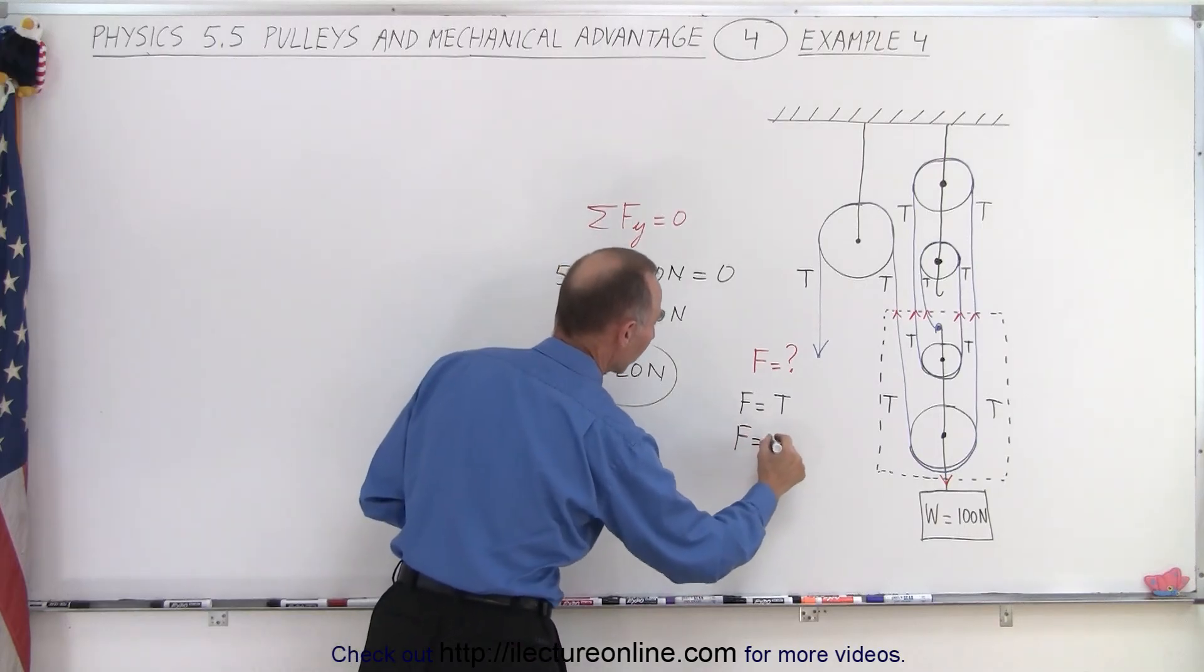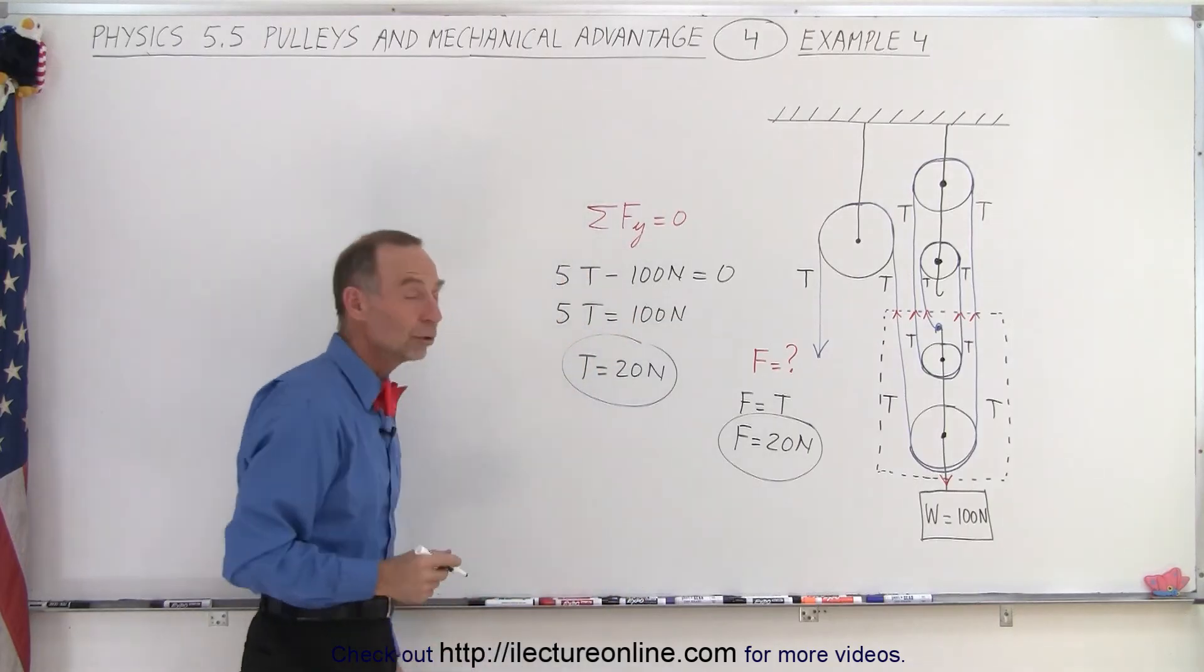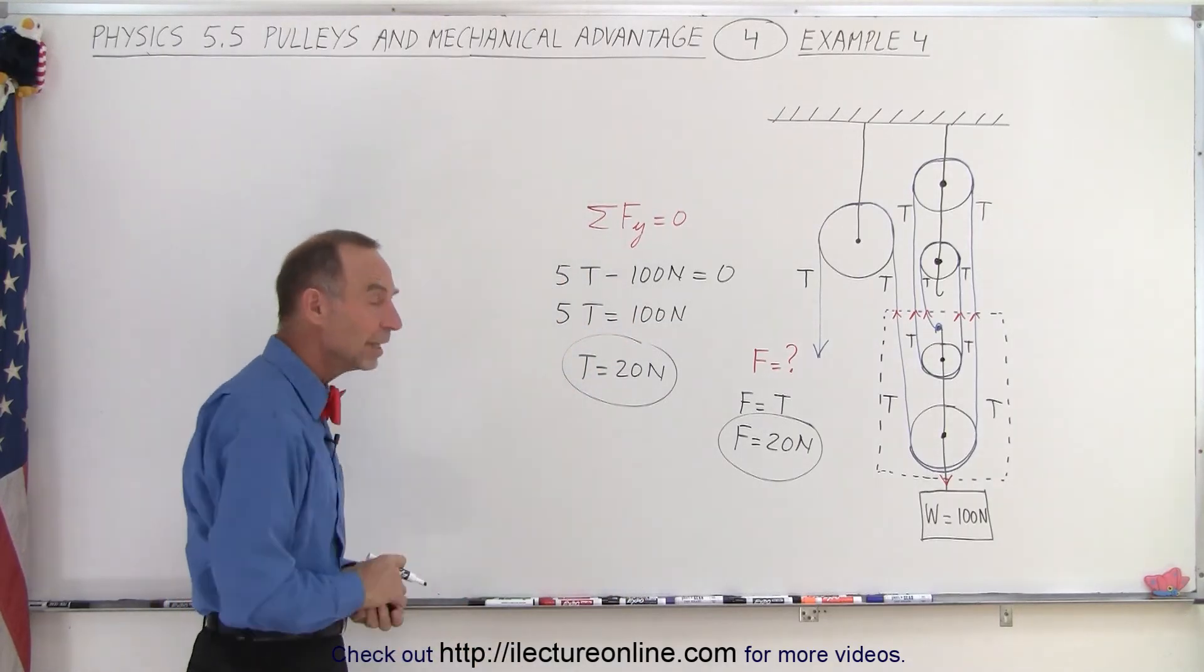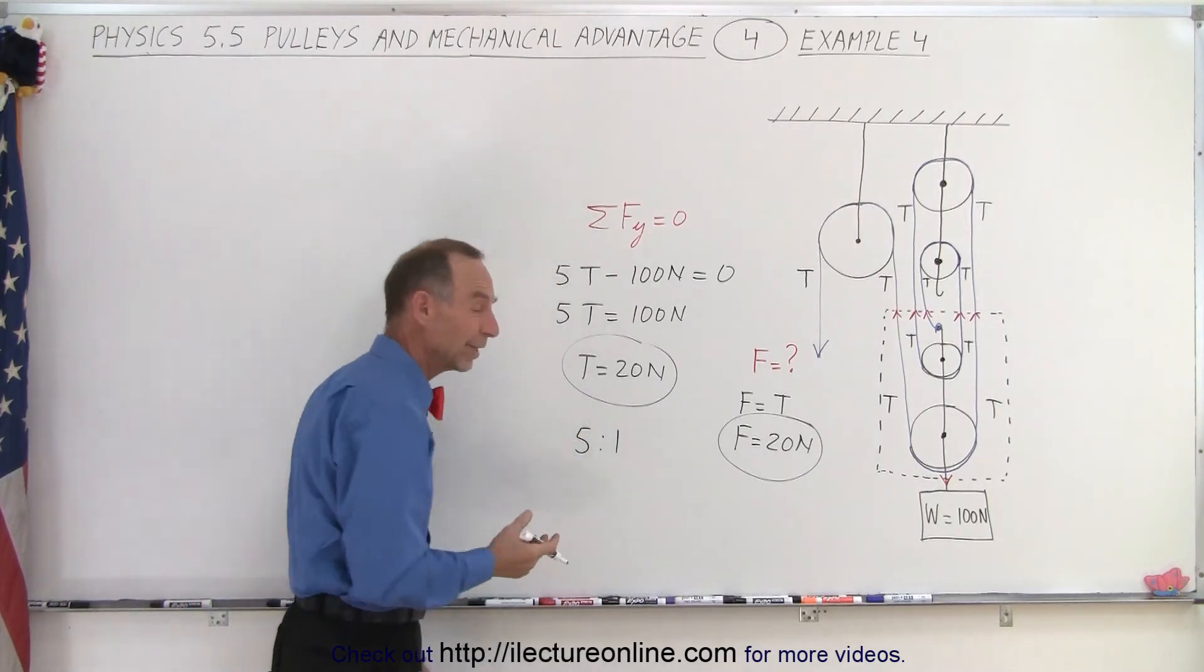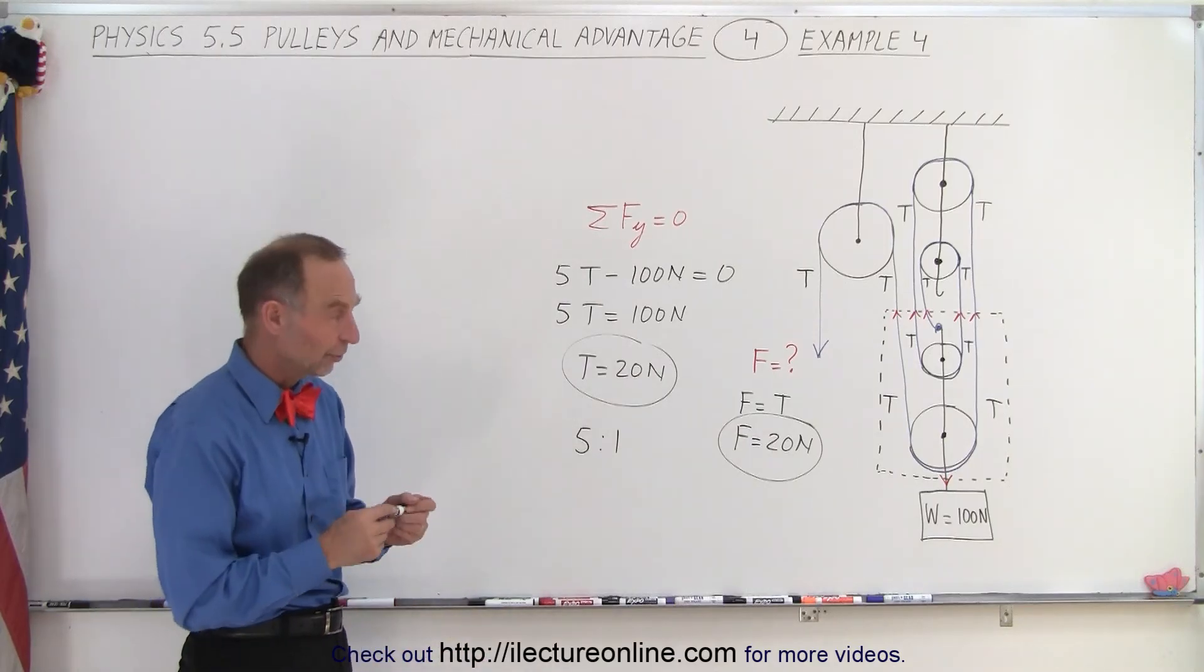And if T is equal to 20 newtons that means the force required to hold up that 100 newton weight is 20 newtons, or the force required to pull it up at a constant speed is indeed 20 newtons. And the mechanical advantage therefore is five to one. In other words we only need one-fifth of the force to lift up the 100 newton force.